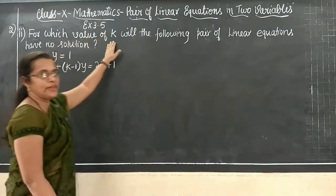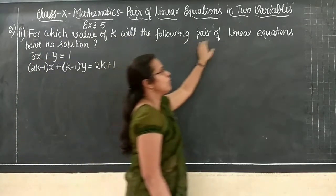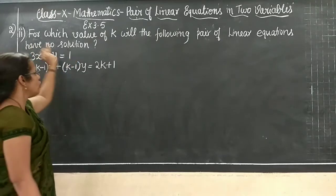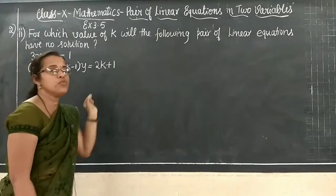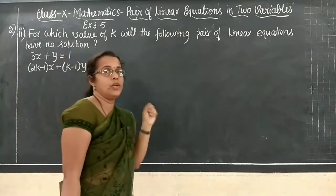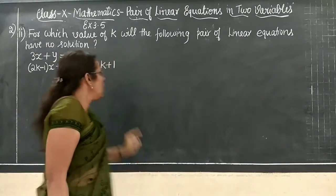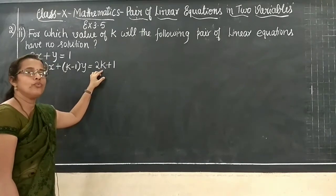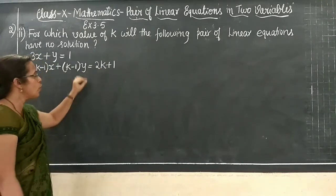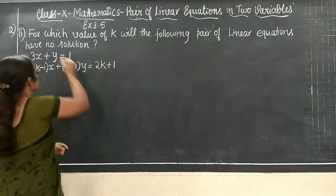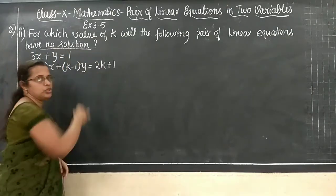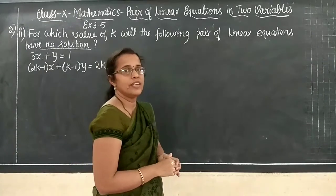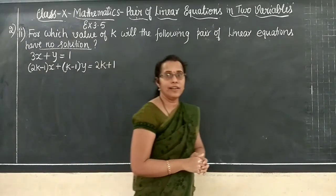For which value of K will the following pair of linear equations have no solution? So for which value of K, you have to find the value of K. When do linear equations have no solution? That is for parallel lines.